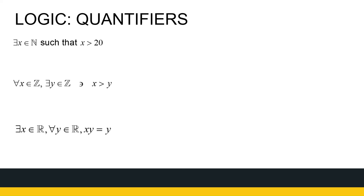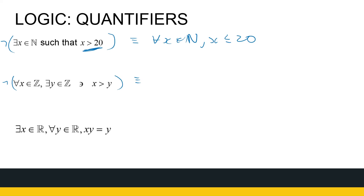Let's look at some more negations. The negation of 'there exists a natural number x such that x is greater than 20' is 'for all natural numbers x, x is less than or equal to 20' — because the negation of greater than is less than or equal to. The next statement has both 'for all' and 'there exists': the negation of 'for all integers x, there exists an integer y such that x is greater than y' is 'there exists an integer x such that for all integers y, x is less than or equal to y.'